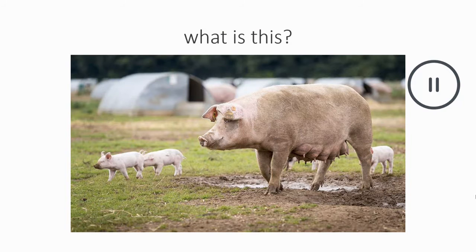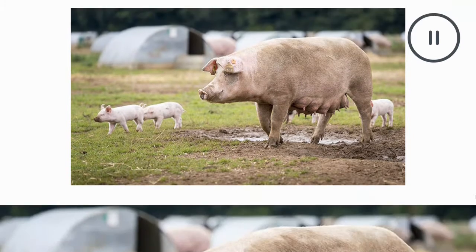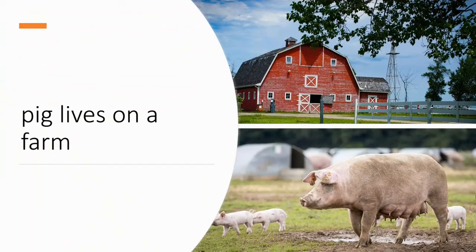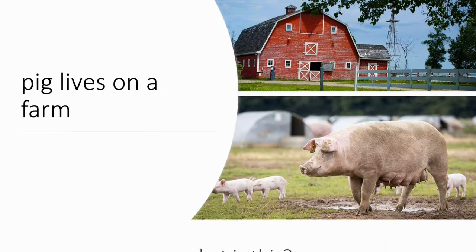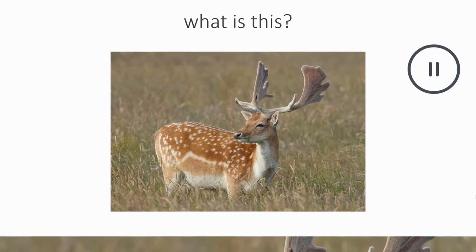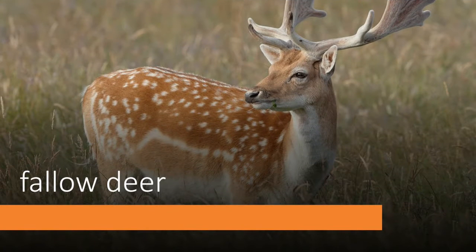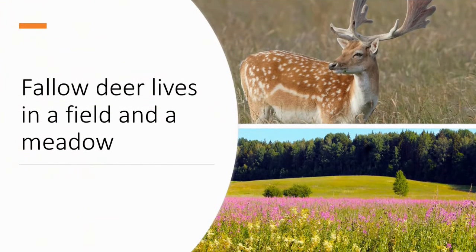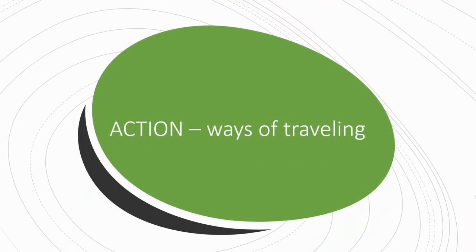What is this? Pig. Pig lives on a farm. What is this? Fallow deer. Fallow deer lives in a field, in a meadow.